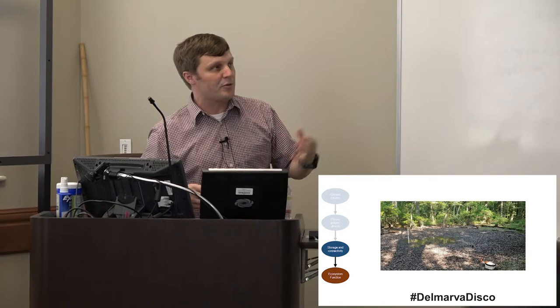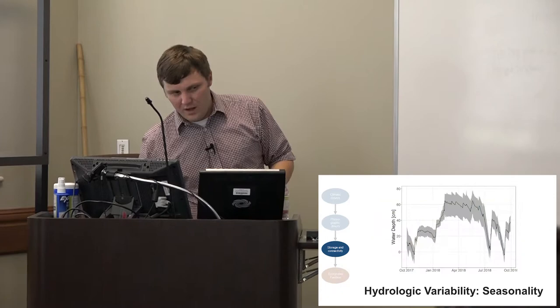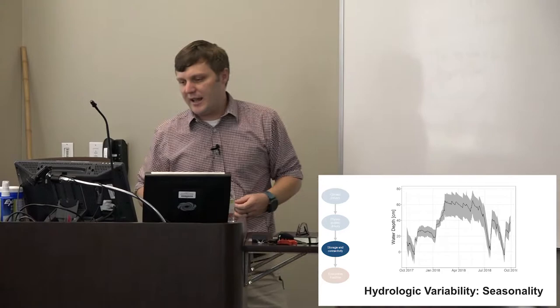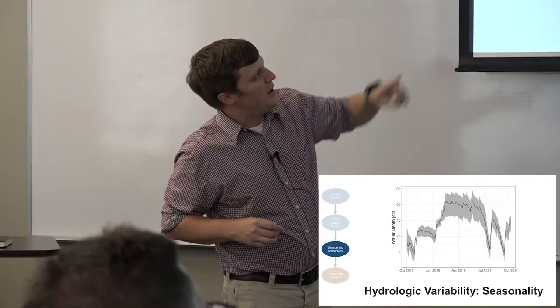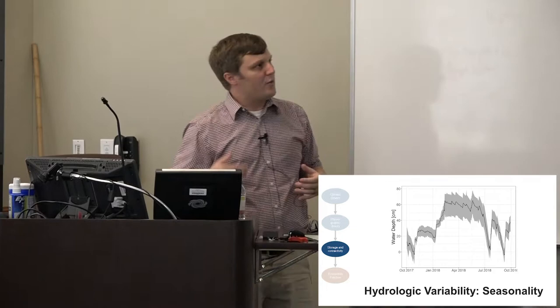And those are really the hardest to both see from space with remote sensing data, and also the hardest to predict from a hydrologic standpoint as well. So we had roughly 24 wetlands instrumented, and they all fell within this gray band. This is the water level in the middle of the wetlands. So they had this general seasonal pattern, but there was variability across. And what we did is we utilized that variability across the wetlands to look at drivers of the differences.